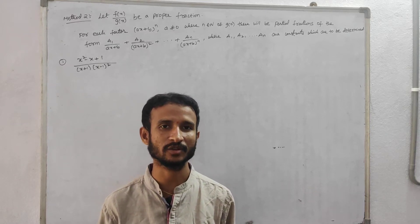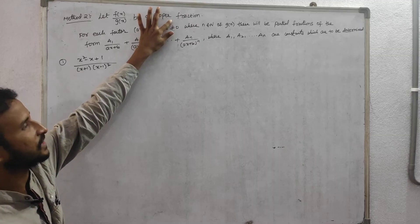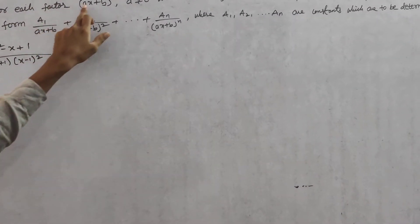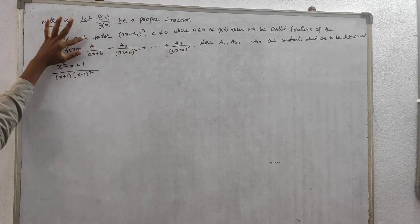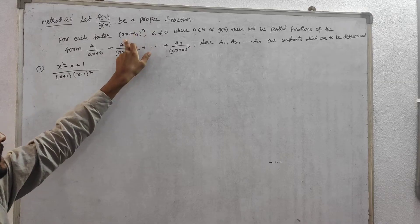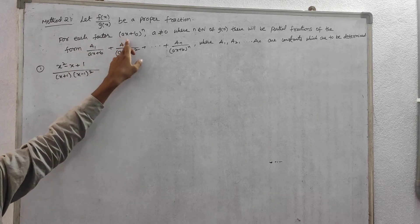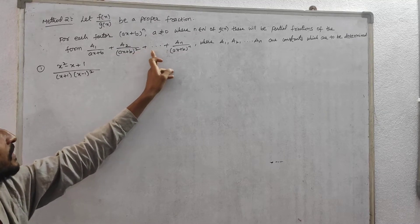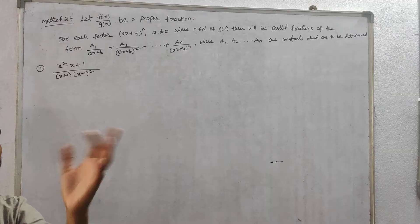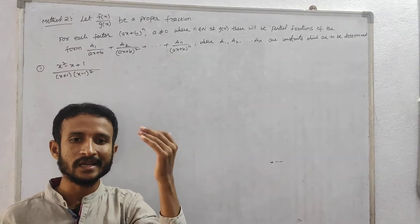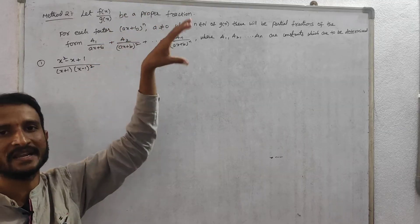Method 2 of partial fractions. Let f(x)/g(x) be a proper fraction — the given fraction should be a proper fraction. For each factor (ax + b)^n in g(x), meaning repeated linear factors, we take partial fractions of the form a1/(ax+b) + a2/(ax+b)² + ... up to n, with increasing powers in the denominator and constants a1, a2, ..., an in the numerators.